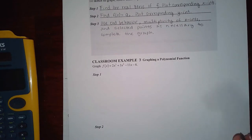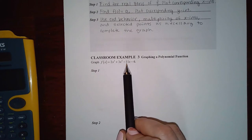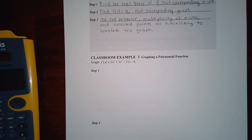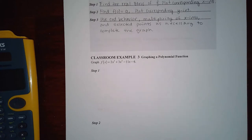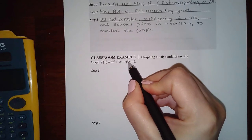We're going to do three steps to graphing a polynomial. Step one is to find the real zeros. To find the real zeros, I need the polynomial in factored form. This one doesn't look like it can be factored easily, so I'm going to change this 11 into a 4 — I've verified this matches your homework — so you should be able to do this problem.